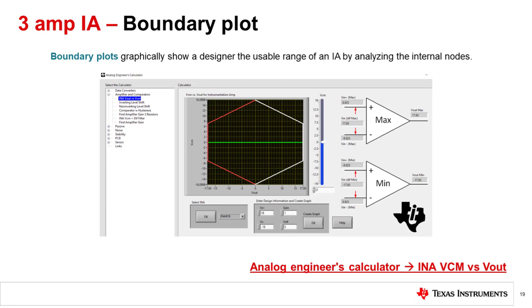This plot is available with all of our IA releases through a calculator tool called Analog Engineers Calculator under INA VCM vs VL. You can select the IA part number, enter your specifications, including supply, gain, reference voltage, and common mode voltage, and the calculator will generate the boundary plot to guide you through linear design and operation.